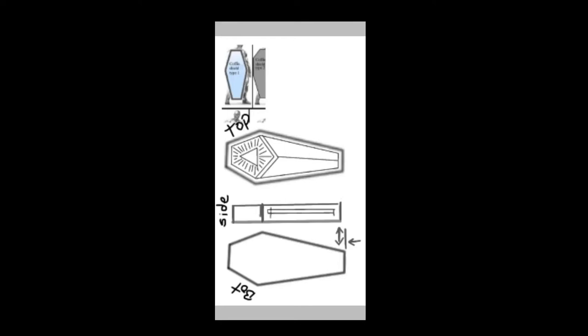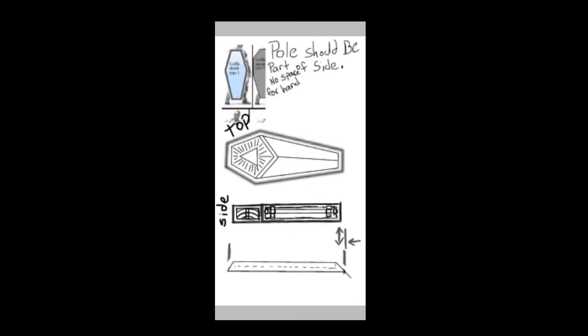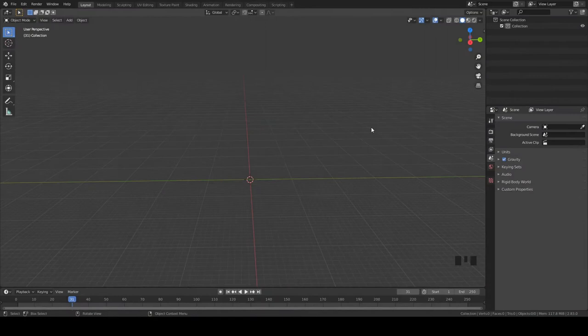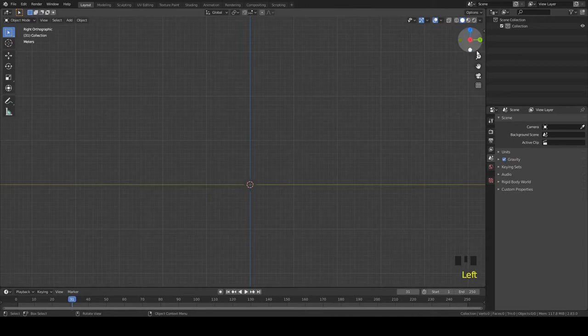So Hate from the Discord server requested that I do this coffin here. He made a handy little video himself and also gave me a handy reference image. So when you go to add a reference image to your Blender in the main window, the first thing you're going to want to do is center an axis. I don't care which one, just center one of them.